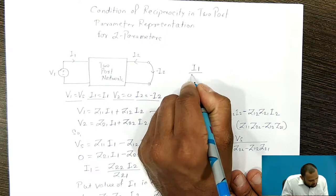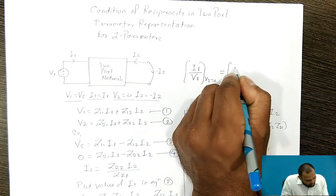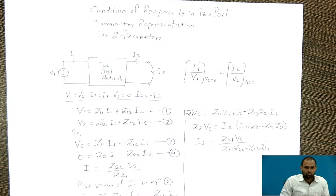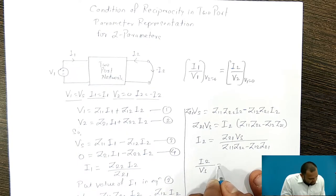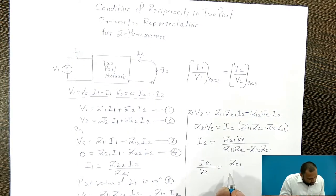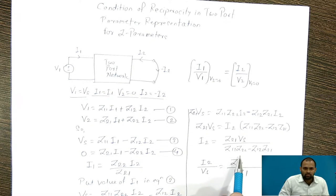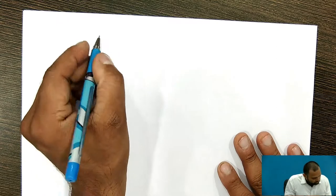This is the value of current I2. For the circuit to be reciprocal, the condition is I1/V1 at V2=0 should be equal to I2/V2 at V1=0. We have to check for this condition. The ratio I2/Vs equals Z21 divided by the determinant of the Z matrix, where det(Z) = Z11·Z22 − Z12·Z21.